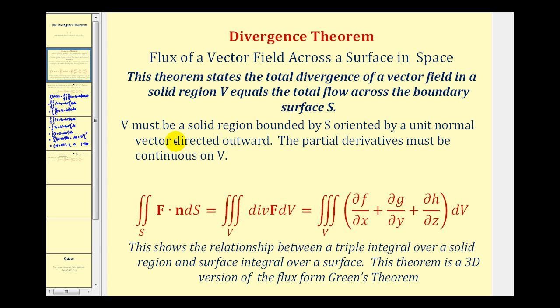The conditions are that V must be a solid region bounded by S oriented by a unit normal vector directed outward. And also our partial derivatives here for div F must be continuous on V.